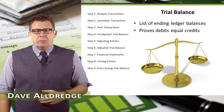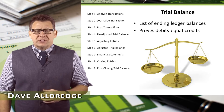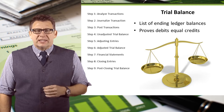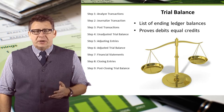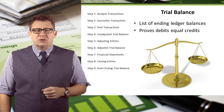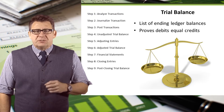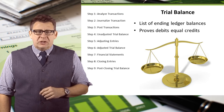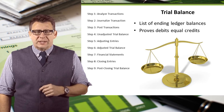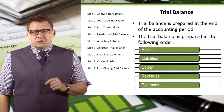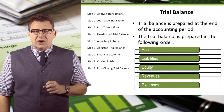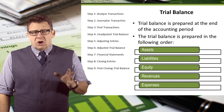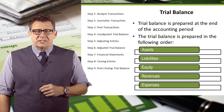Preparing the unadjusted trial balance is the fourth step in the accounting cycle. A trial balance is a list of company accounts and their ending ledger balances. Its primary purpose at this step is to make sure that debits equal credits. The trial balance is prepared at the end of the accounting period, as are all of the subsequent steps in the accounting cycle.